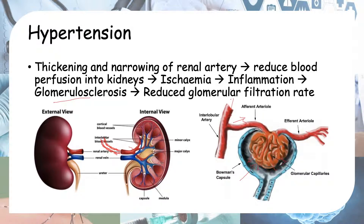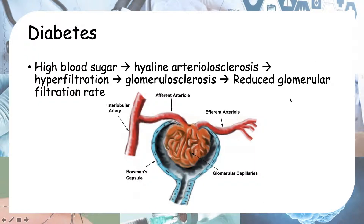Glomerulo refers to your glomerulus — this structure here — and sclerosis means hardening. So glomerulosclerosis is thickening and hardening of your glomerulus, which results in a reduced glomerular filtration rate, or GFR. The lower your GFR, the higher your stage of renal failure — this is how chronic kidney disease is categorized.